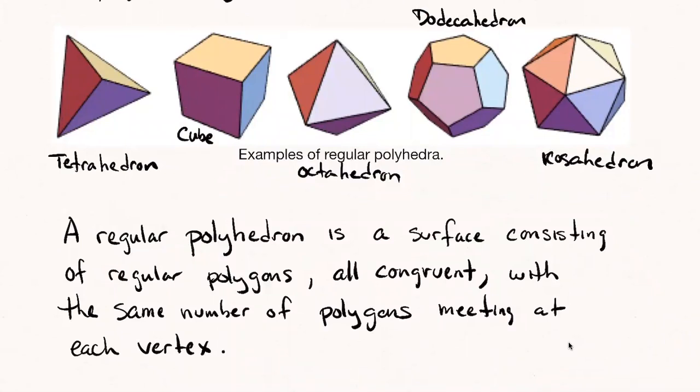By a regular polyhedron what I mean is it's a surface, or you can think of it as a solid, but in particular I mean the surface of the solid and that surface is made out of regular polygons. The polygons they all have to have equal side length and equal angles, is what I mean by a regular polygon. They're all congruent. And they have to have the same number of polygons meeting at every vertex.